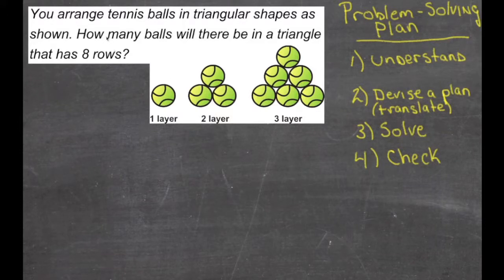This question says, we're going to arrange tennis balls in triangular shapes. There's an image of it here. And we need to know how many balls there will be in a triangle that has eight rows. So, the first thing we're going to do is make sure we understand the question.